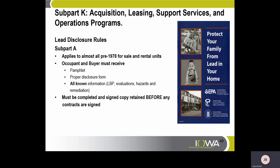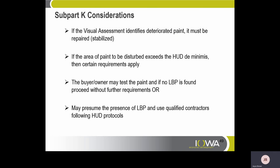Subpart K covers acquisitions, leasing, support services, and operations programs. The lead disclosure in Subpart A applies to almost all pre-1978 for-sale or rental units. Occupants and buyers must receive the pamphlet. Proper disclosure forms must be signed and all known information — lead-based paint, evaluation, hazards, and remediation — must be disclosed before any contracts are signed. Subpart K considerations: if the visual assessment identifies deteriorated paint, it must be repaired or stabilized. If the area of paint to be disturbed exceeds HUD de minimis levels, certain requirements apply. The buyer-owner may test the paint, and if no lead-based paint is found, proceed without further requirements, or may presume its presence and use qualified contractors following HUD's protocol.